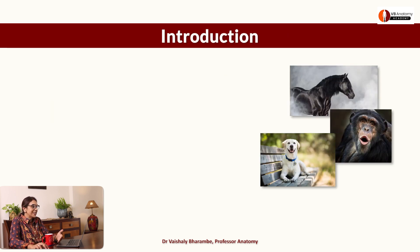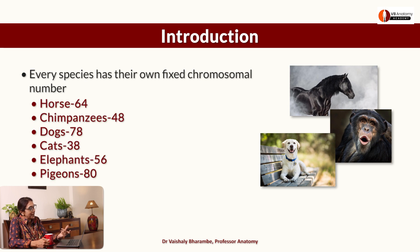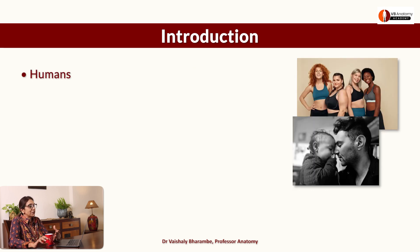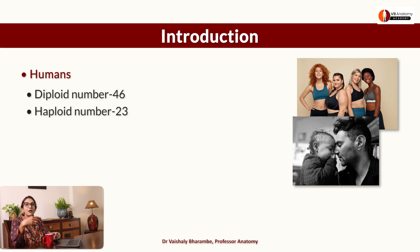Every mammal has their own set of chromosomes. For example, horses have 64, chimpanzees have 48, dogs have 78 chromosomes. Similarly, man has 46 chromosomes. The diploid number in man is 46. The haploid number carried by a gamete — one from the father, one from the mother — is 23.